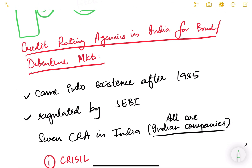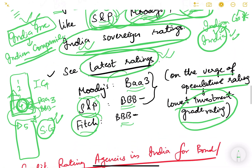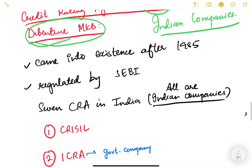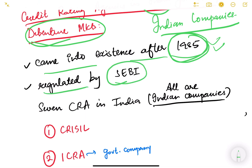For bond and debenture markets, there are separate credit rating agencies in India which give ratings to Indian companies or companies incorporated in India. Credit rating agencies in India came into existence after 1985. Importantly, they are regulated and registered by SEBI — the Securities and Exchange Board of India — and not by RBI.